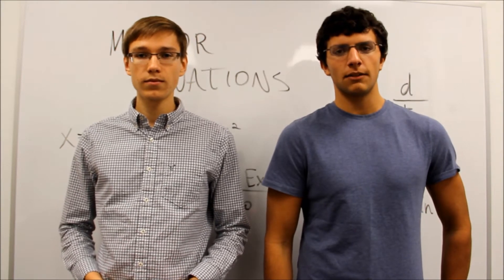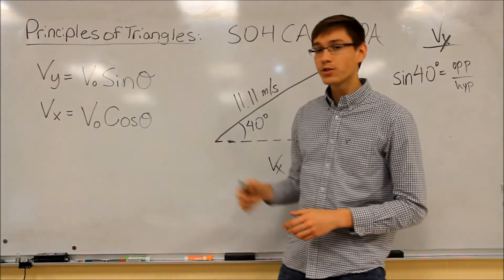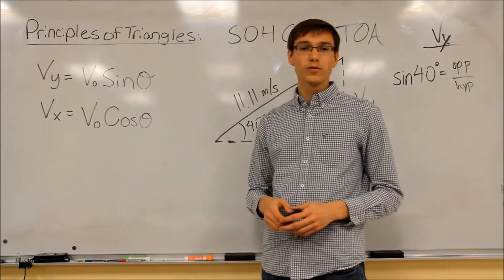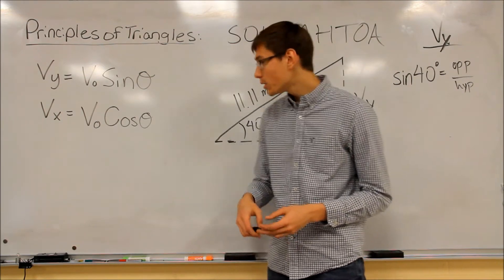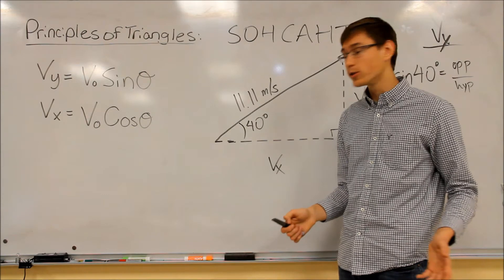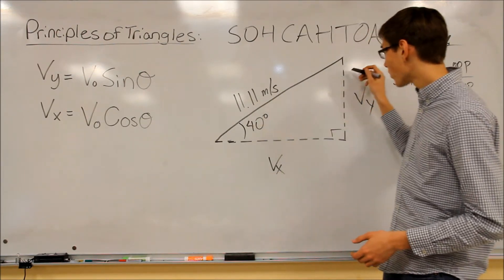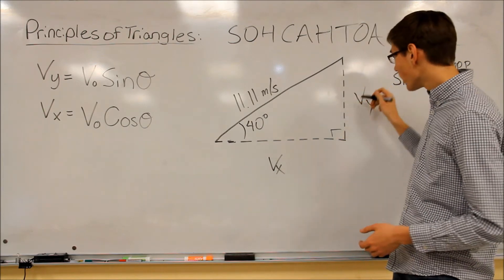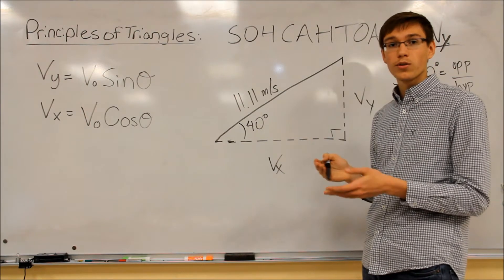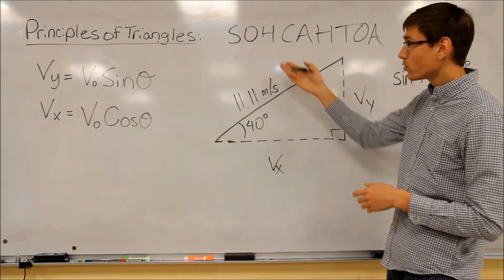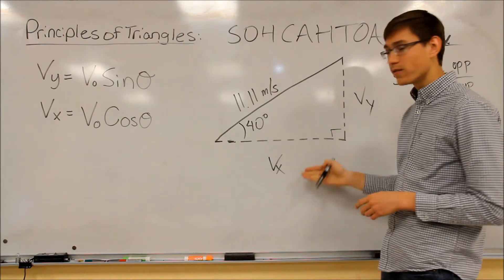Now here's the derivation for finding the velocity of the x and y components. We have the two formulas: vy equals initial velocity times sine theta, and vx equals initial velocity times cosine theta. We derive these equations by constructing a triangle of our situation — a vector — where the velocity of the dart is 11.11 meters per second. We can then draw components of this velocity as vy and vx: the vertical and horizontal components of velocity. Then we use SOHCAHTOA, or our trigonometric properties, to find vy and vx.